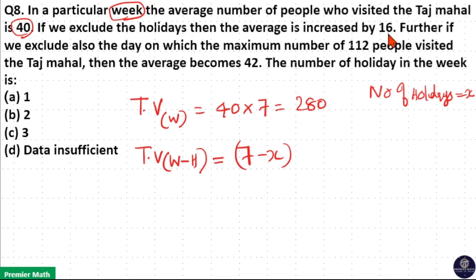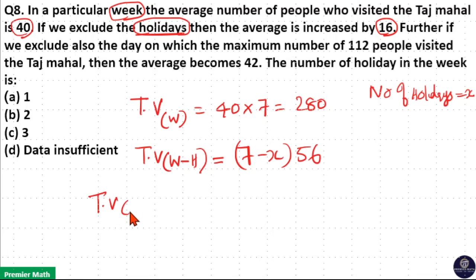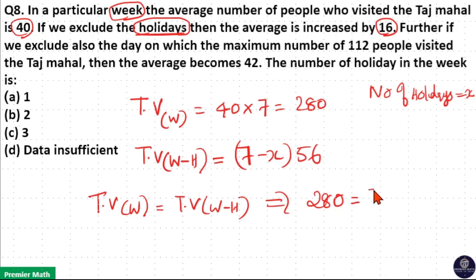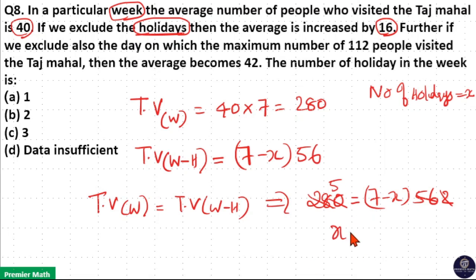The average after excluding holidays is 40 plus 16, that is 56, multiplied by the total number of non-holiday days. Since there are no visitors on holidays, total visitors in a week equals total visitors on non-holiday days. Therefore, 280 equals 7 minus X multiplied by 56. Now, 28 goes 2 times in 56 and 2 goes 5 times in 10, so 7 minus X equals 5, meaning X equals 2. The number of holidays is 2.